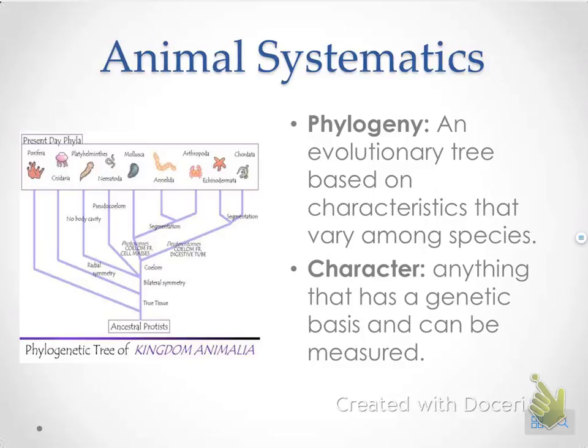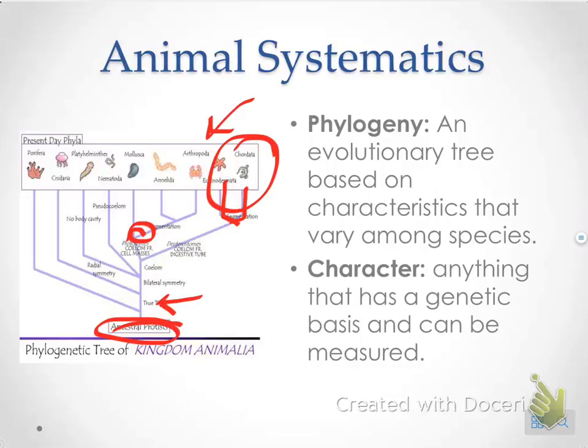Phylogeny is an evolutionary tree based on these characteristics. This diagram goes from the middle outward — you have your ancestral protist and then branch off. The sooner it branches off, the more ancient the species. Two branches that come from the same place are more closely related. A character is just any specific trait, such as no body cavity, radial symmetry, a coelom, or a pseudocoelom — all of those things are known as characters.